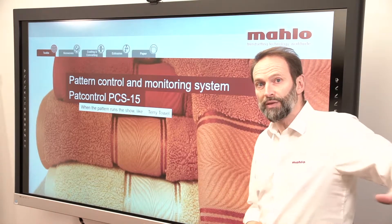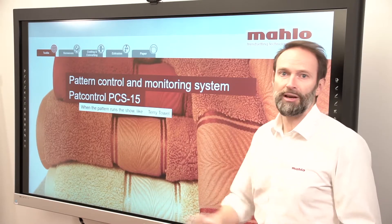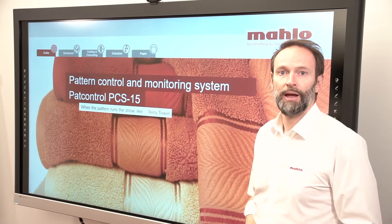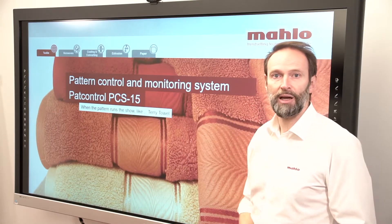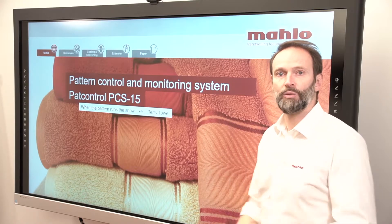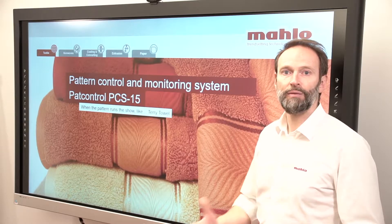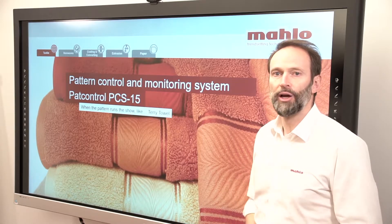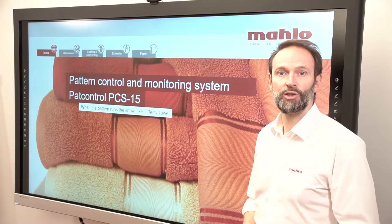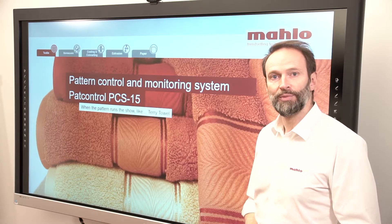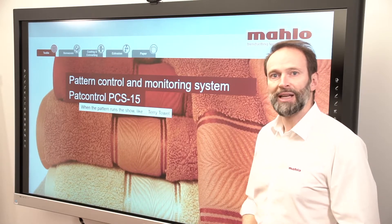Due to the surface of the terry towels — the piles — the weft structure is very hard to identify. However, we need a straight product that always has the same length repeat. Therefore we have to identify all the possibilities to straighten and optimize the length of the terry towels.